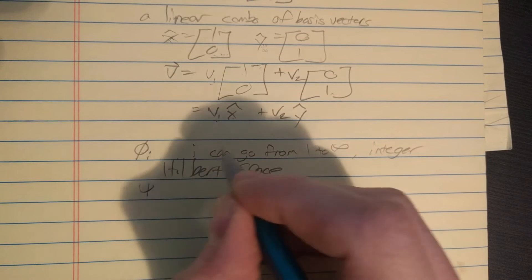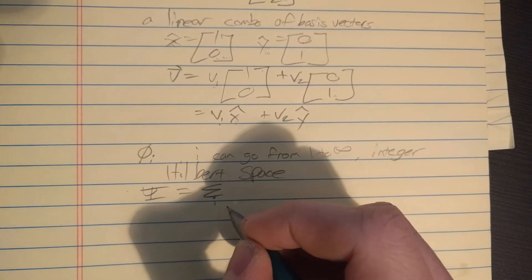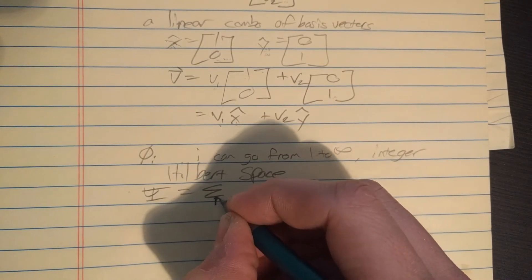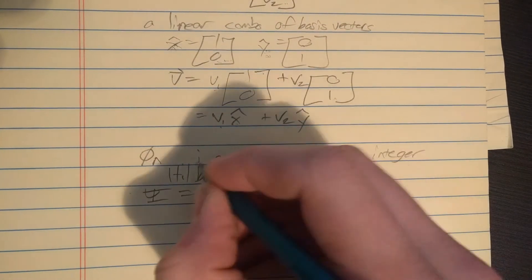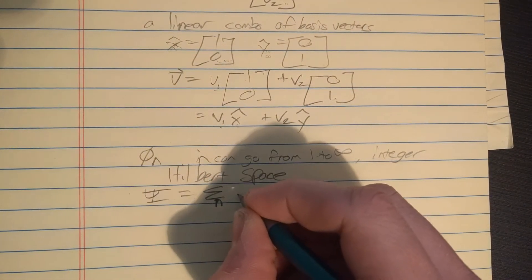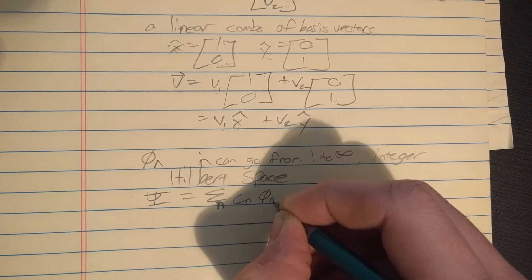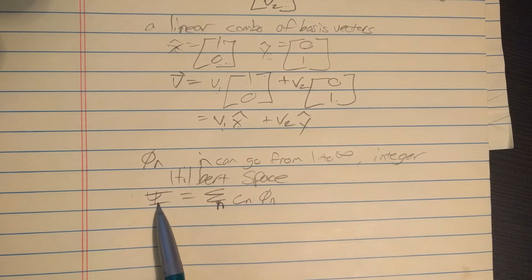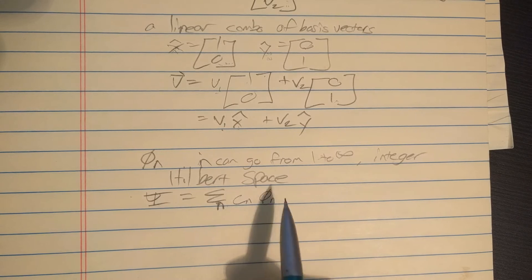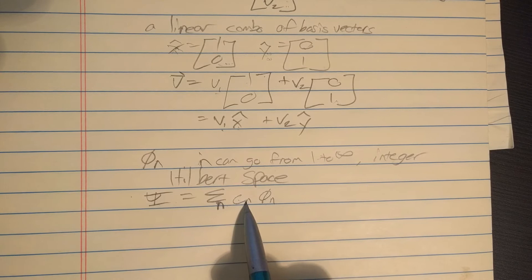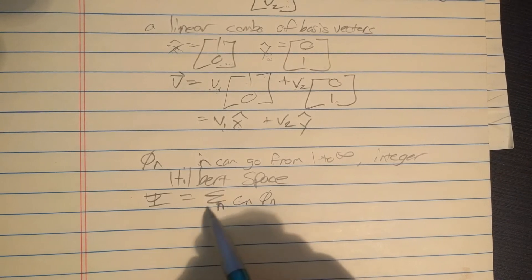I already said that any general state psi can be written as a linear combination of stationary states. I'm gonna change my index to n to make things easier later. This can go from n equals one to infinity and there would be a coefficient c sub n, and then phi sub n. So any state can be written as a linear combination of basis states.